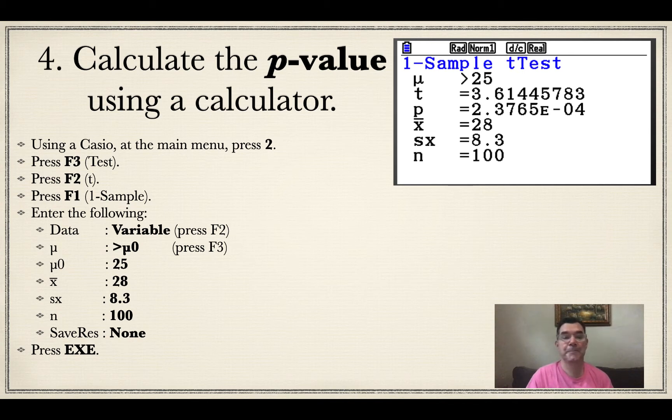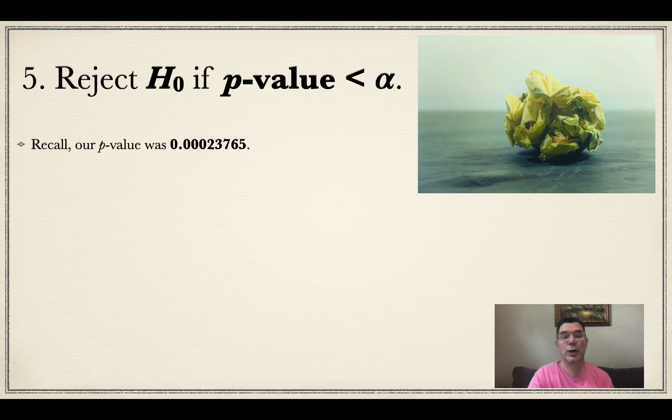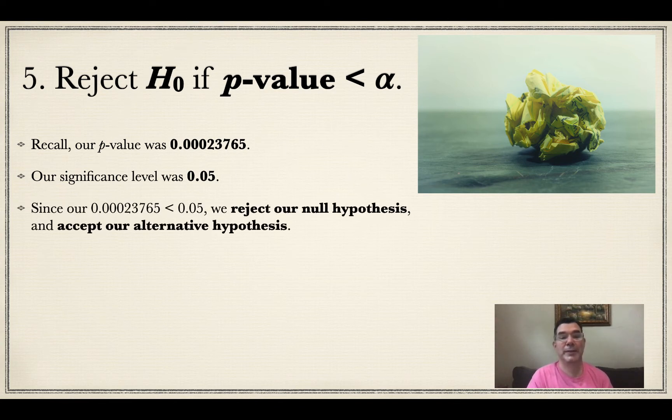I get that t is 3.61445783, and my p-value on the calculator is 0.00023765. Remember, our p-value was 0.00023765. That is less than our significance level, which is 0.05. That means we will reject our null hypothesis and accept our alternative hypothesis.